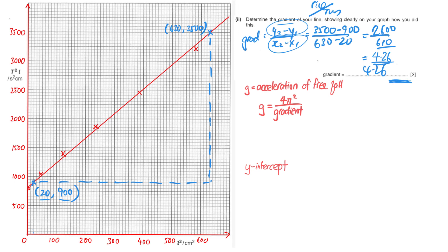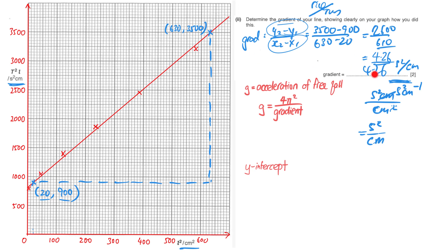So you take whatever units are in the rise — which is s squared cm — over the units on the run, which is cm squared. If you simplify, even though you haven't seen these units before, it's fine. The s squared remains and the cm cancels, giving you s squared per cm, or equivalently s² cm to the power of minus one. With the correct presentation on the graph, correct working, correct sig figs, and correct units, you will get the two marks.